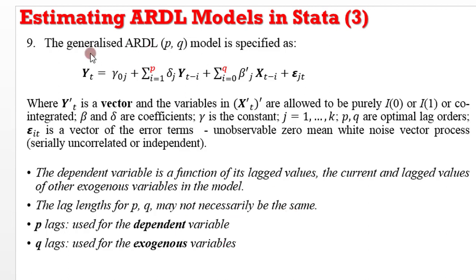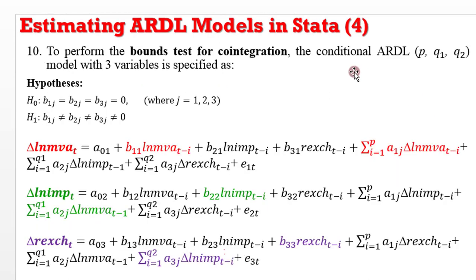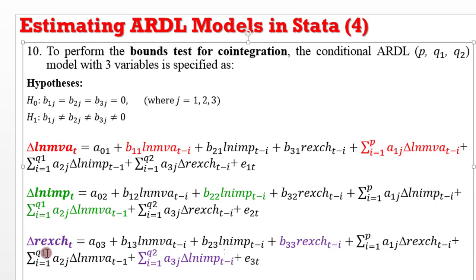YT can be a vector, meaning each variable in the model can become a dependent variable. I have three variables in this model: the log of MVA, the log of IMP, and real exchange rates. I'll be taking each of them when estimating the bounds test for cointegration. The null hypothesis is that the coefficients of the long-run equation are all equal to zero, against the alternative that these coefficients are not equal to zero.